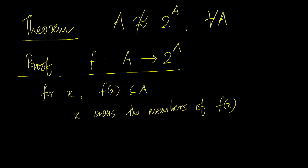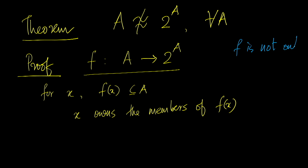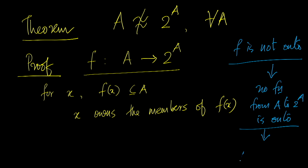The function f we considered is arbitrary. We have shown that this arbitrary function is not onto. So any function f from A to 2 power A is not onto, which means no function from A to 2 power A is onto. Therefore A is not equinumerous with 2 power A. In other words, no set can be equinumerous with its own power set.